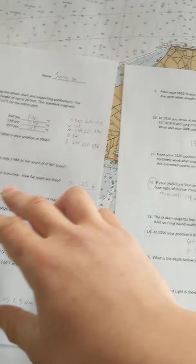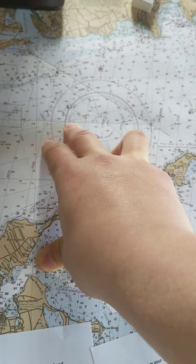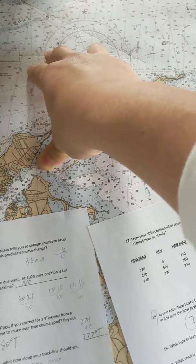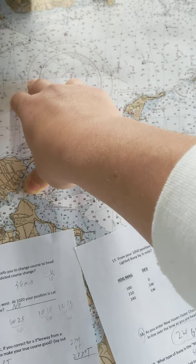I then marked that on my track line and took my 312 bearing, moved it to that 1.5 nautical mile, and found where the 312 bearing crossed over the 331 bearing, and where those two bearings would meet is where my position would be.